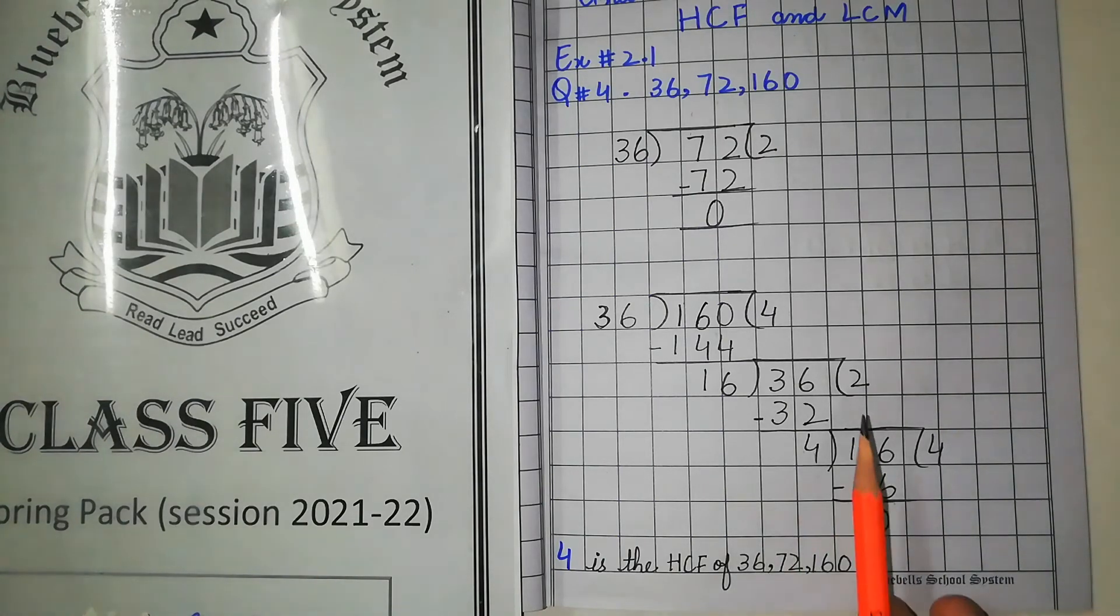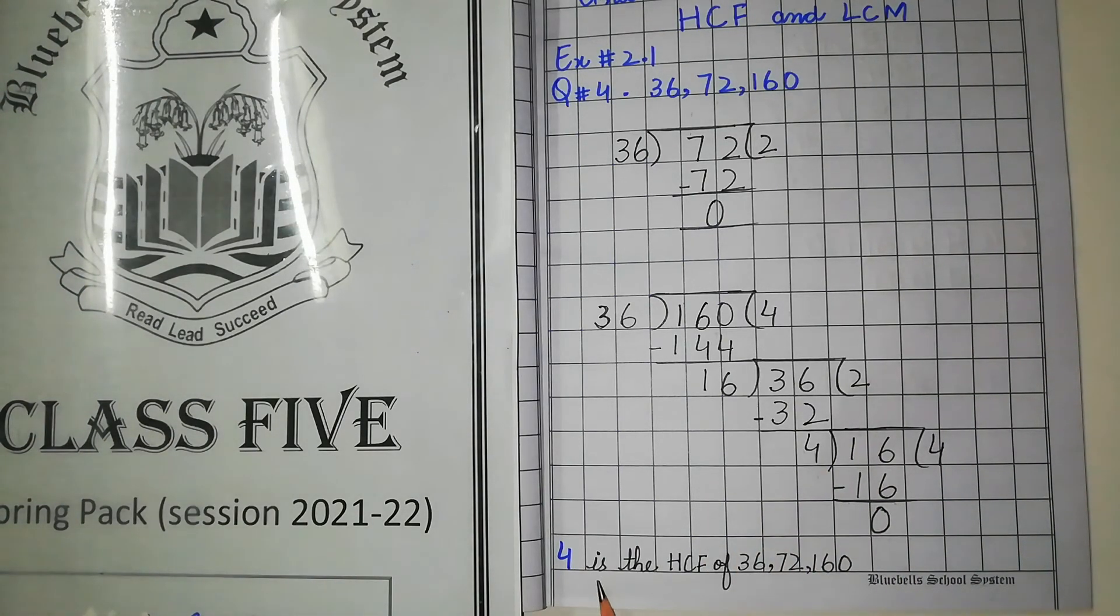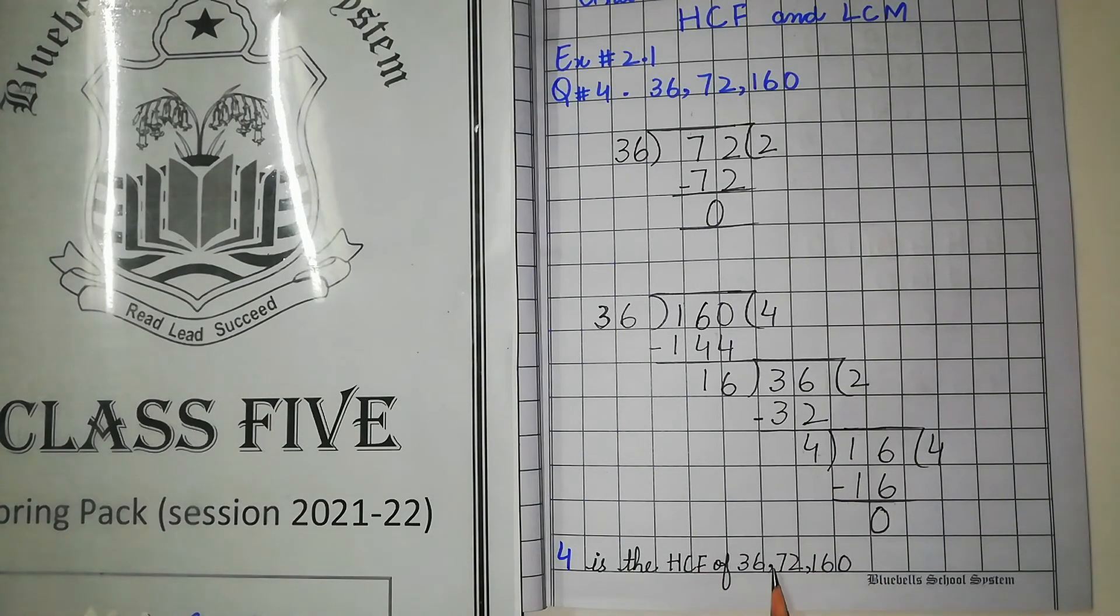So, what is our HCF? 4. 4 is the HCF of 36, 72 and 160.